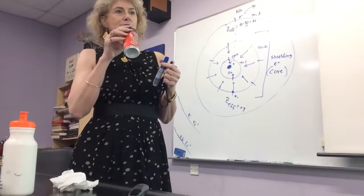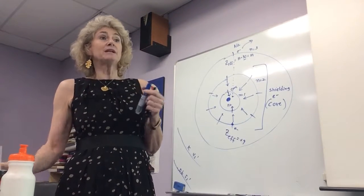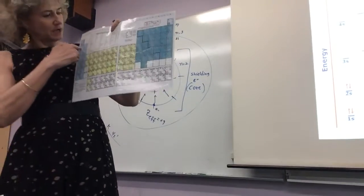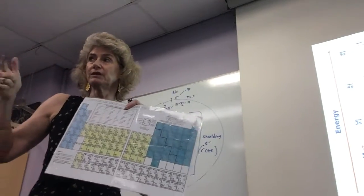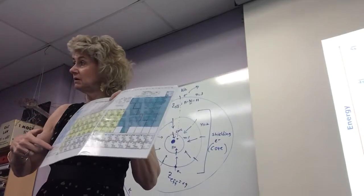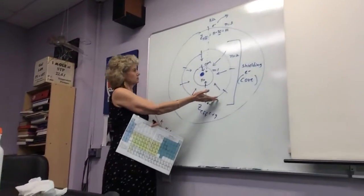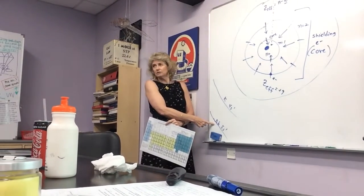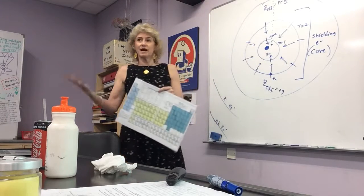As you move down a group, the opposite happens for size — because you're adding more energy levels. Yes — the periodic trend for size: across the period they get smaller and smaller, drawn in because the nucleus is getting bigger and valence electrons don't shield each other. As you move down the groups, the shells get bigger, so they're further away. Any electron in the outermost shell is feeling hardly anything, and consequently it's easier to come off — which means it's reactive.